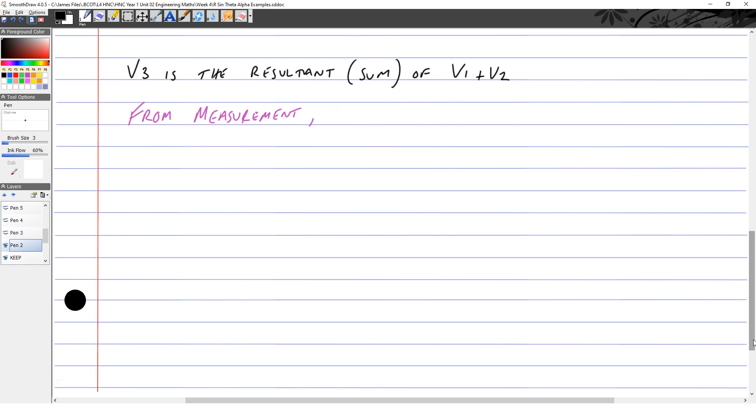So from measurement, if we drew it correctly, R was 4.64 units using the same scale, and alpha was 27.24 degrees. V1 plus V2, which is equal to V3, we can say it's 4.64 sin(ωt + 27.24°).